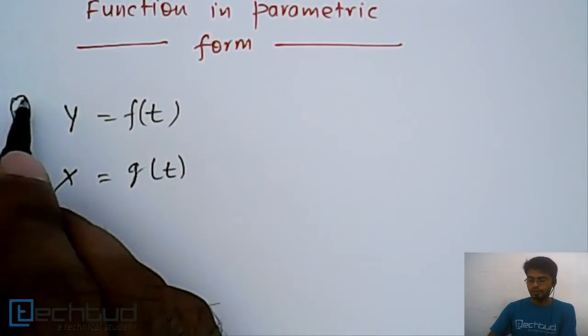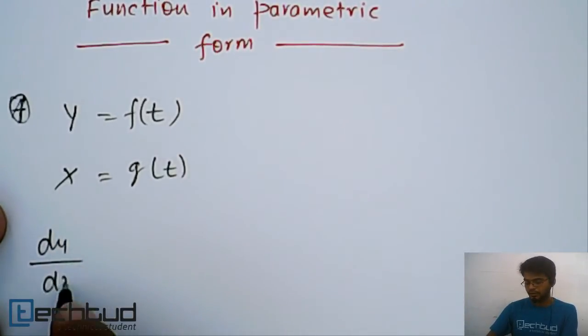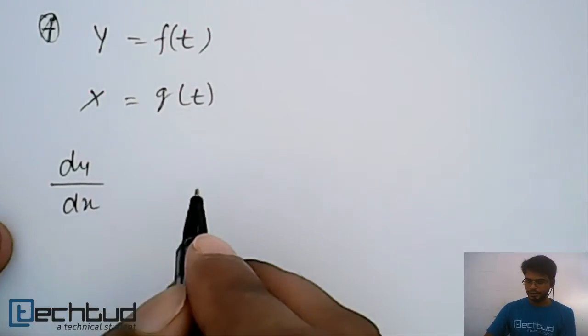This kind of thing is given to us. Now we have to find out dy/dx. So what do we do in this case? To find out dy/dx, what do we do?